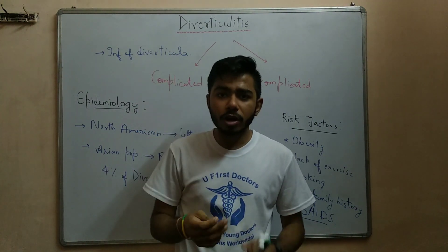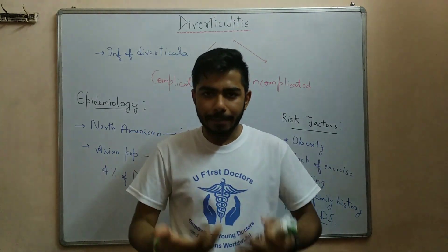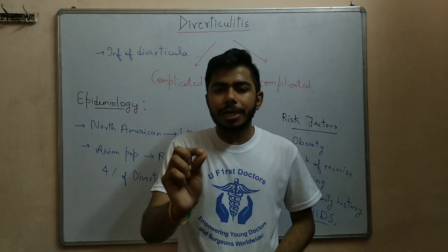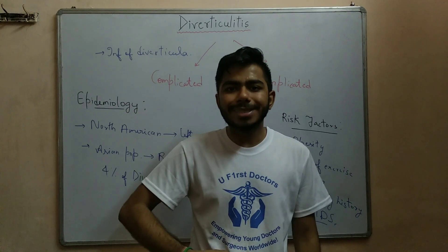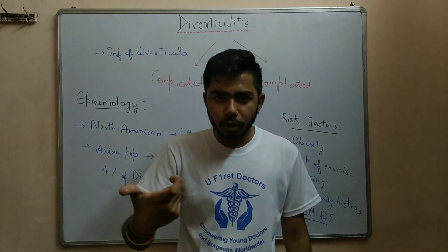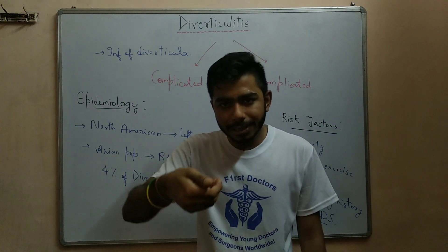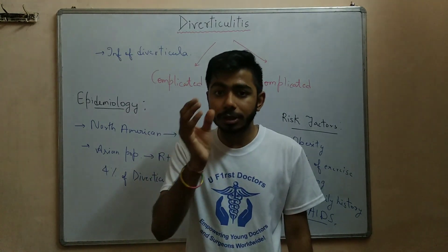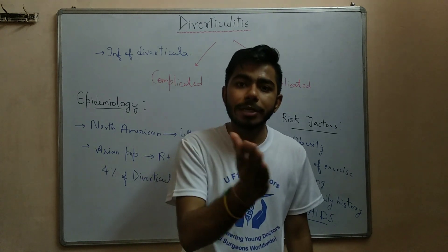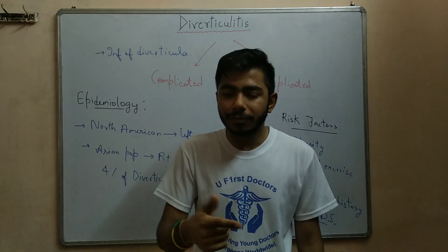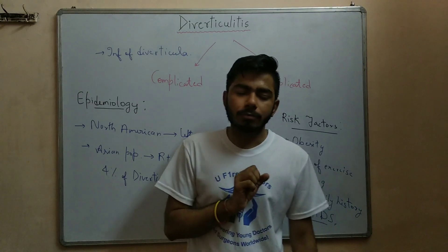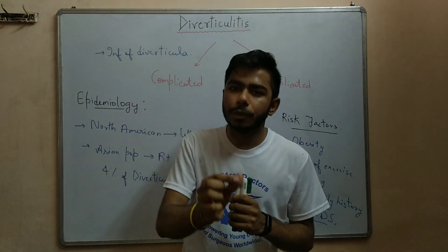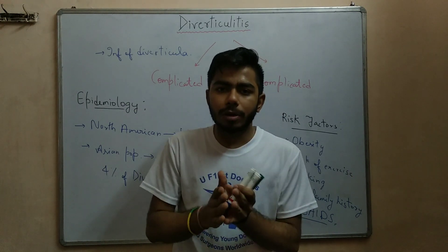Regarding pathophysiology: some part of the colon can protrude from its normal position, which we call diverticulum (single) or diverticula (multiple pouches). When diverticula are present, we call it diverticulosis. When those diverticula become inflamed and rupture, we call it diverticulitis. Diverticulosis patients are usually asymptomatic and diagnosed incidentally, while diverticulitis patients present with fever and pain.